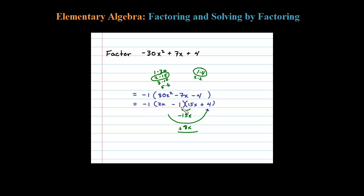The middle term will add up to negative 7x, but will the end term work? Let's see, negative 1 times positive 4 is negative 4, so that's correct. It's factored correctly.